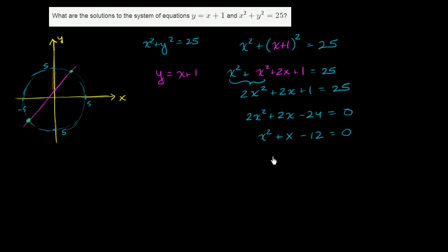And actually, we don't even have to use the quadratic formula. We can factor this right over here. What are two numbers, when we take their product, we get negative 12, and when we add them, we get positive 1? Well, positive 4 and negative 3 would do the trick. So we have x plus 4 times x minus 3 is equal to 0.